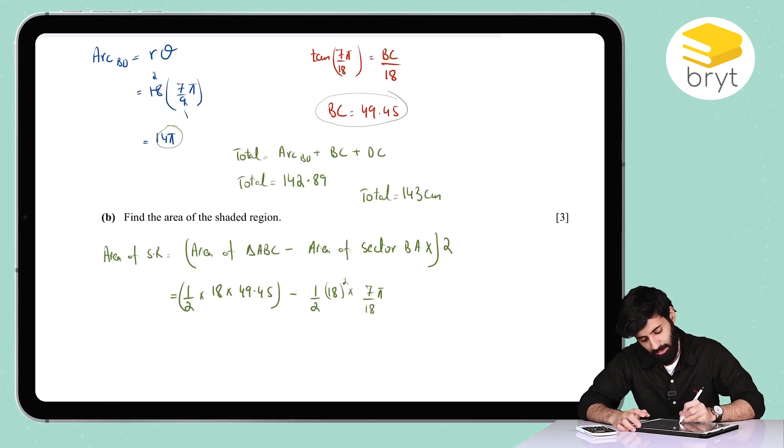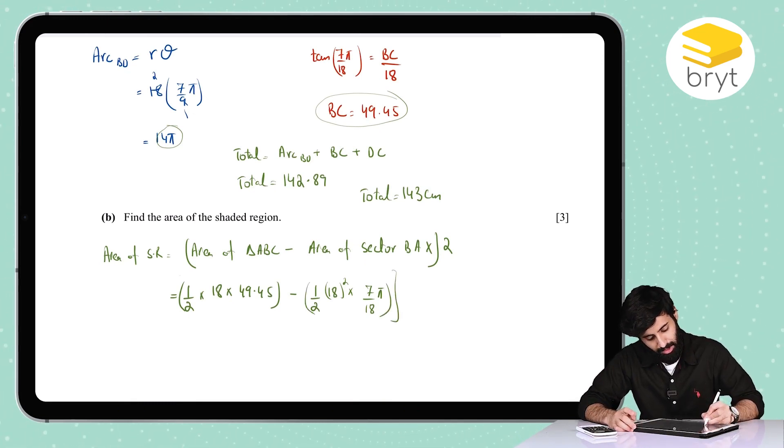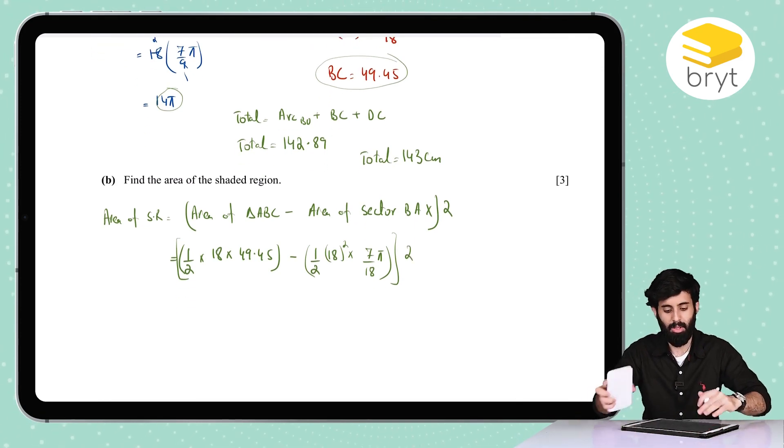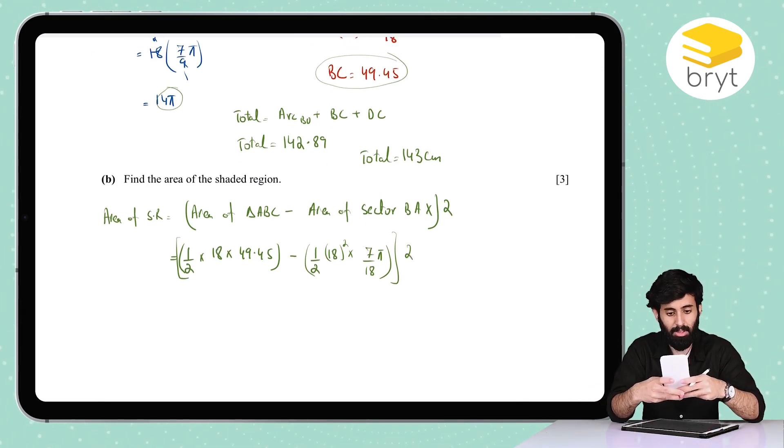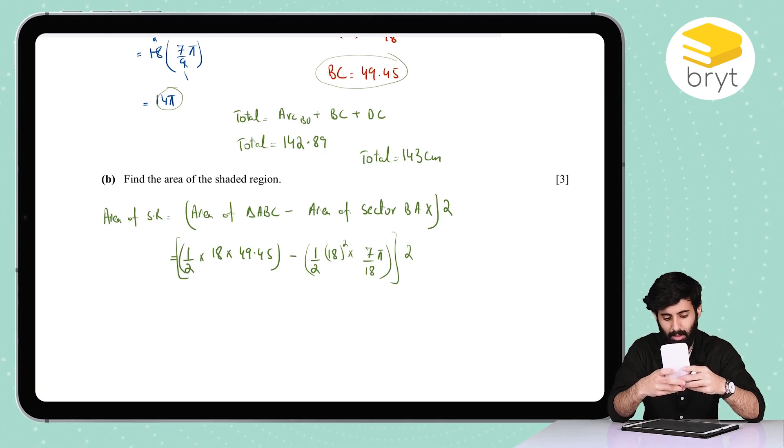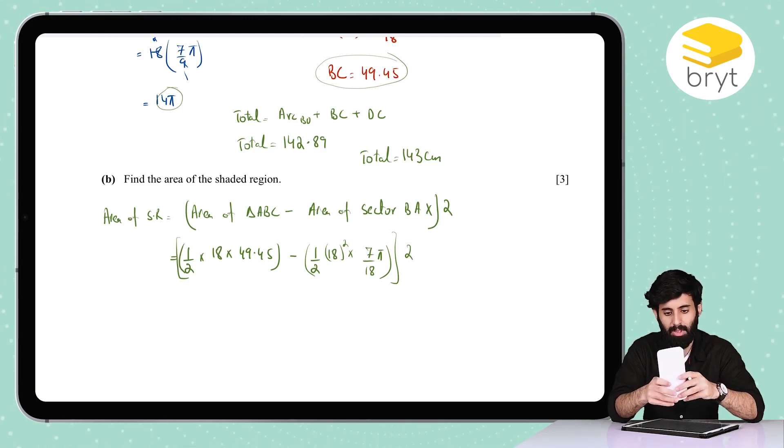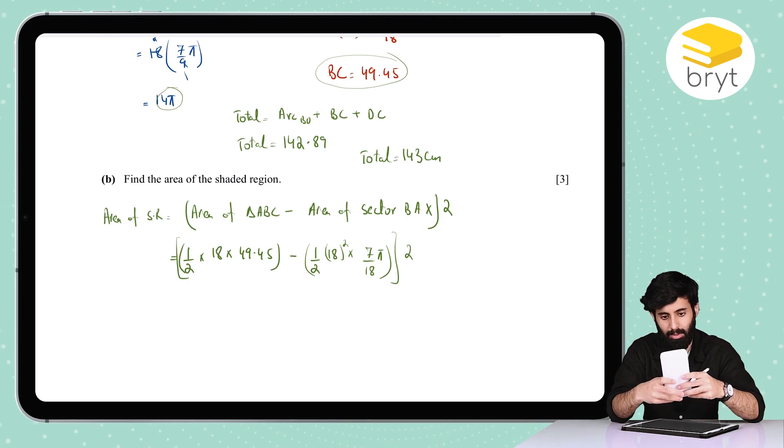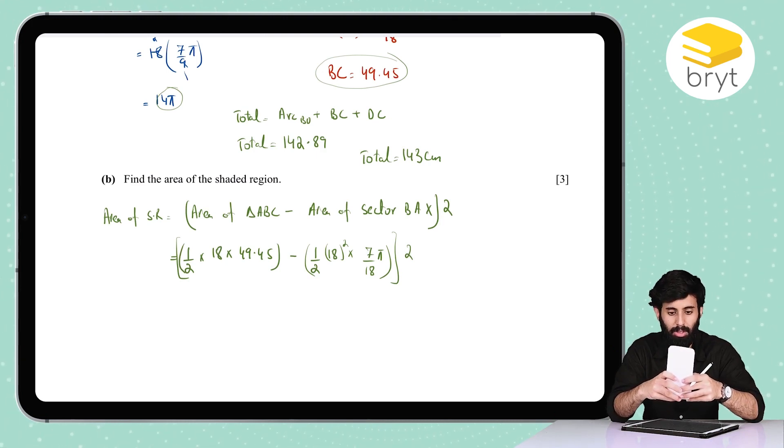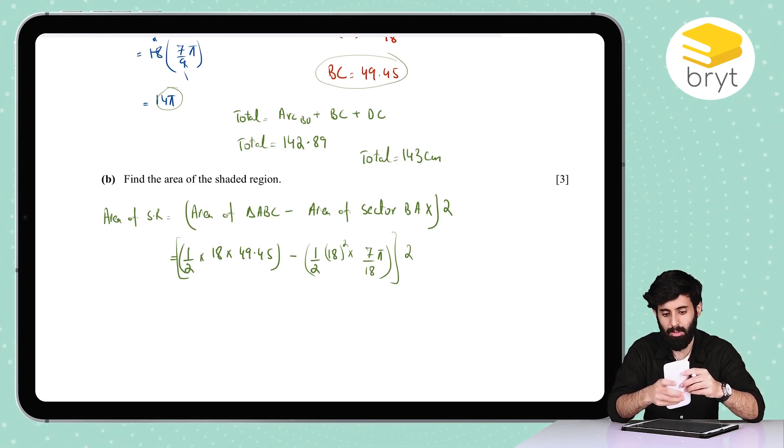Once I've worked this out in my calculator, I'm just going to multiply the whole thing by two. So now I'm working this out. This is it: 1 upon 2 times 18 times 49.45. I'm going to keep this in my calculator for now. And then I'm going to subtract 0.5 times 18 squared, or half times 18 squared, into 7 over 18 π. Remember to keep π with the numerator only and not with the denominator.